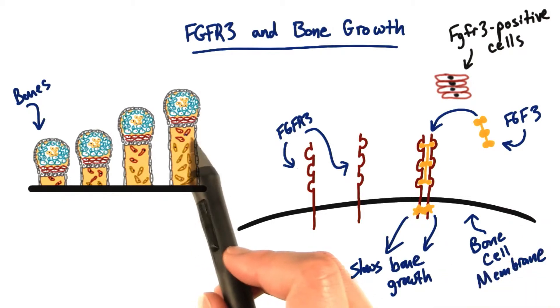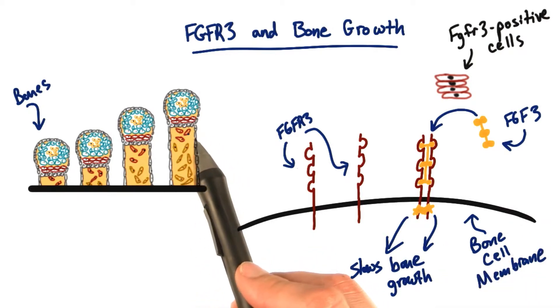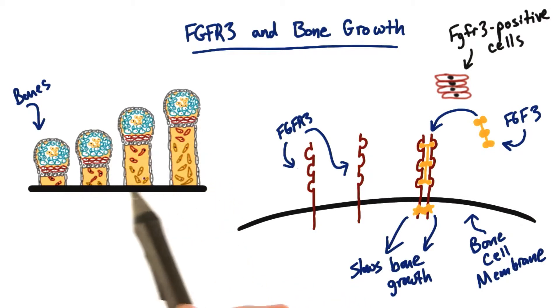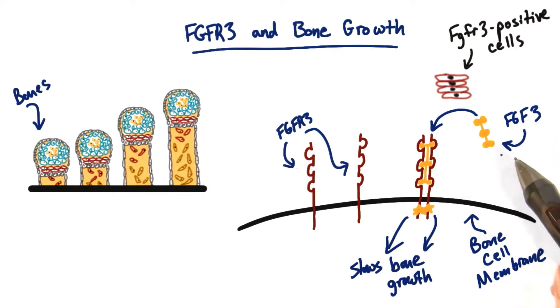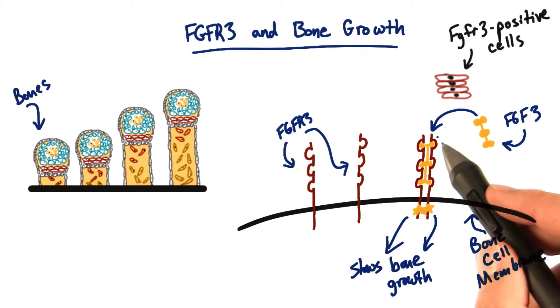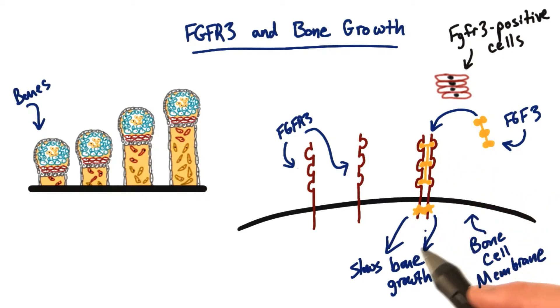Normally these FGFR3 positive cells are growing and dividing, contributing to the cells in the long bone and helping it grow longer. But there's a signal from the environment transmitted through the FGFR3 protein. When the FGF3 protein is around, it's a signal that says slow down bone growth.